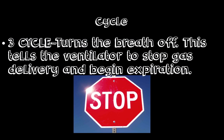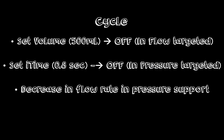Our final phase variable is the cycle. The cycle is what governs the breath to be turned off — it tells the ventilator to stop gas delivery and begin expiration. In the cycle, we have three distinct cycling methods: set volume, set inspiratory time, and decrease in flow rate. If you were in flow-targeted mode, whenever the ventilator reaches a set volume of 500 ml, it signals to stop gas delivery and begin exhalation. If you were in pressure-targeted mode, whenever the ventilator reaches a set inspiratory time of 0.8 seconds, it will stop gas delivery and begin exhalation. If you were in pressure support mode, whenever the ventilator senses a decrease in flow rate in the circuit, it will stop gas delivery and begin exhalation.